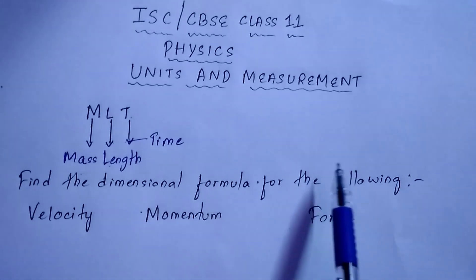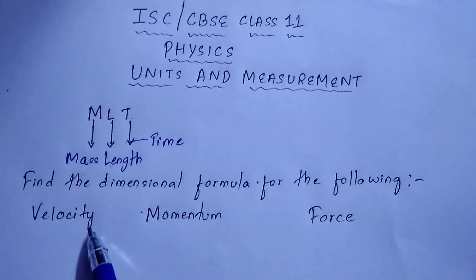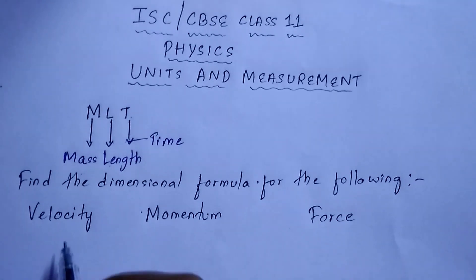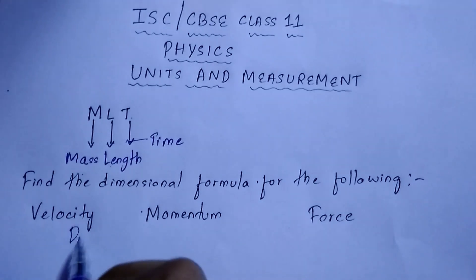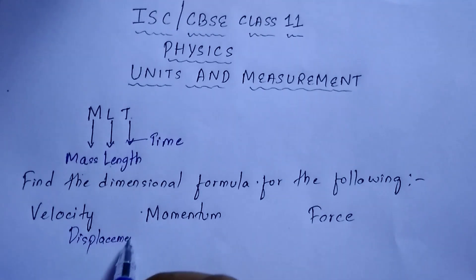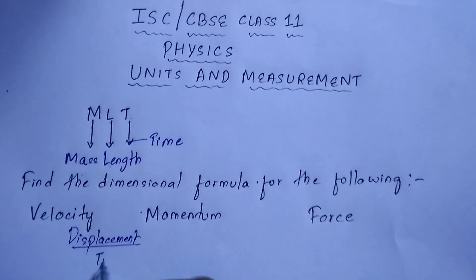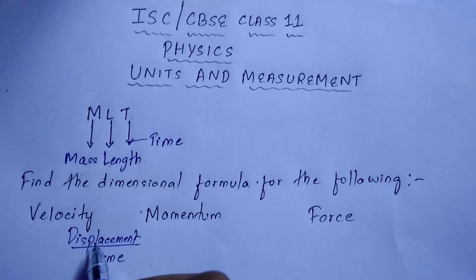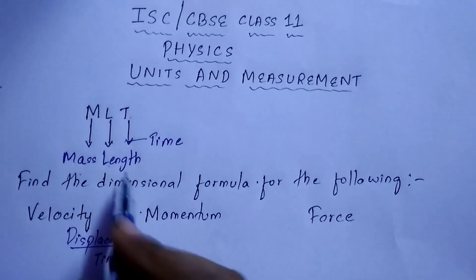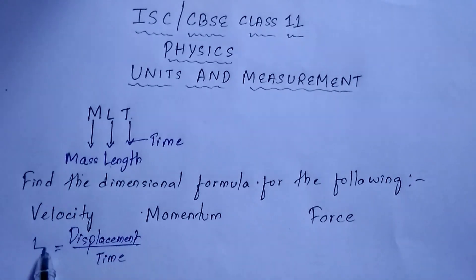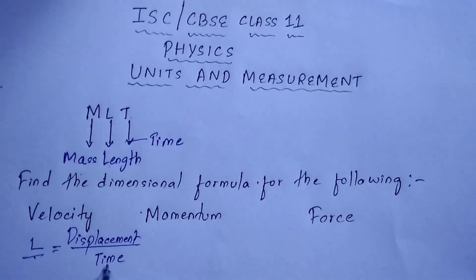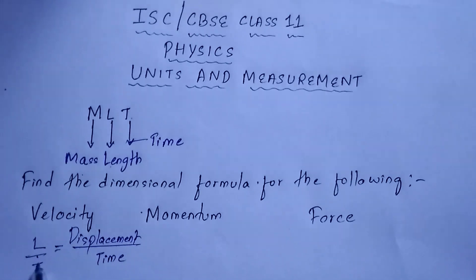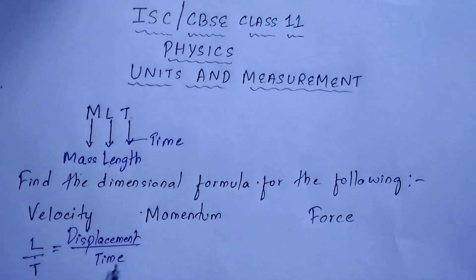Find the dimensional formula for the following. First one is velocity. The formula of velocity is displacement by time. Displacement is measured in meters, so meter is length, and we write L for length.